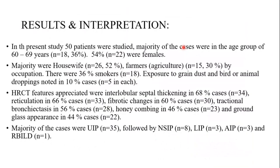Coming on to results and interpretation: we included about 50 patients in our study, and the age group ranged from 60 to 69 years. The majority of the patients were housewives and farmers by occupation. About 36% were smokers. About 10% were exposed to grain dust and bird and animal droppings. On HRCT, we can see features like interlobular septal thickening, reticulation, fibrotic changes, traction bronchiectasis, honeycombing, and ground glass opacity.